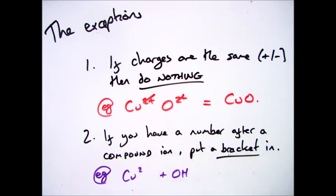So the example here is if you're reacting copper with a hydroxide ion. Do the same again. Rub out the charges. Move them around. Because you've got 2 of oxygen and 2 of hydrogen, you need to put it in a bracket like that.